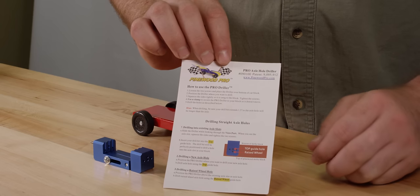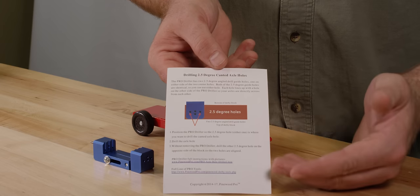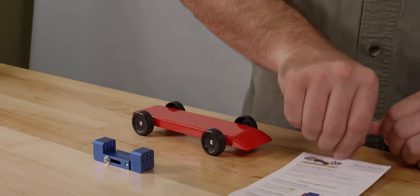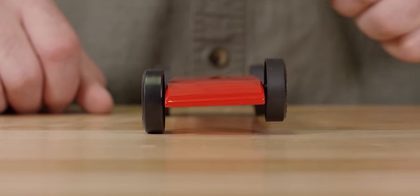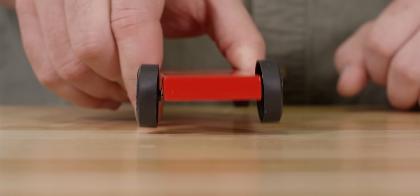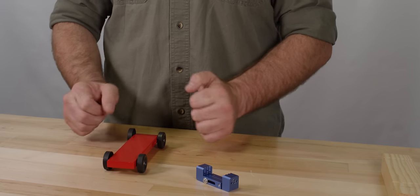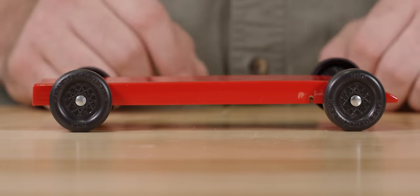And don't worry, the Pro Driller comes with a step-by-step instruction sheet showing the holes and proper tool usage. You can also find the instructions at www.pinewoodpro.com. Your car now has a raised front wheel for added speed. Your car has canted rear axles reducing wheel friction for more speed. And your car has an extended wheel base for stability and even more speed.